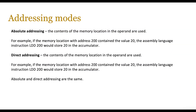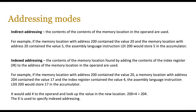Absolute and direct addressing are more or less the same thing. If the memory location with address 200 contains the value 20, the assembly language instruction LDD 200 would store 20 in the accumulator, because it goes to address 200 and whatever data is stored there goes into the accumulator. Direct works exactly the same way — LDD 200 with value 20 stored at address 200 loads that value into the accumulator.